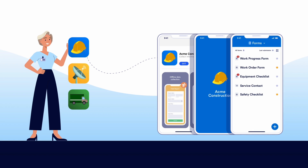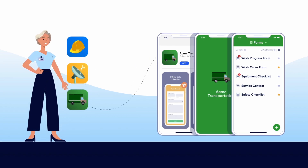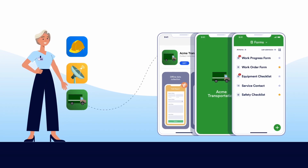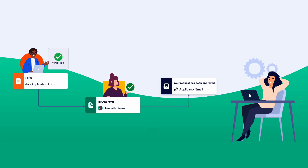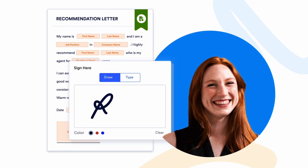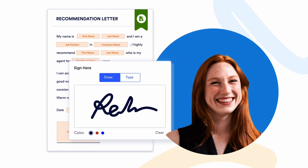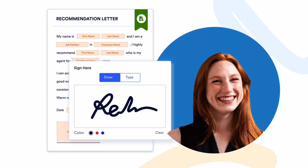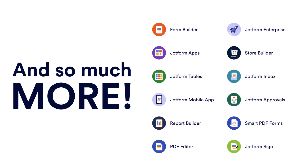You can even use other built-in features like JotForm Apps to create an app without coding, Approvals to set up automated approval flows, and JotForm Sign to collect signatures with e-sign documents. There's also a PDF editor, reports, and so much more.